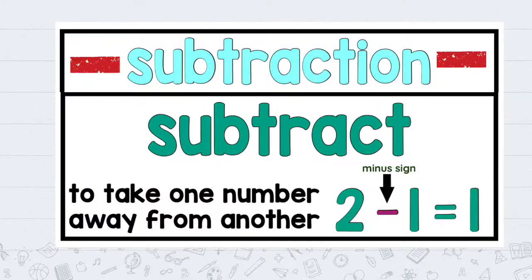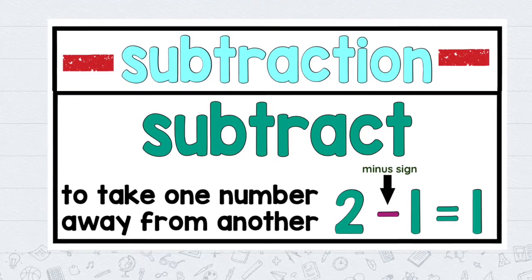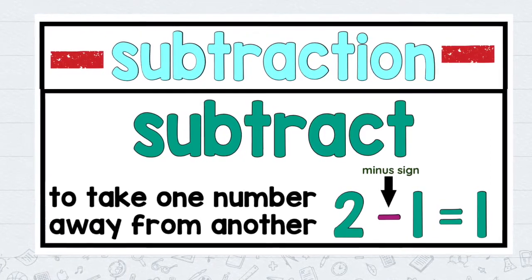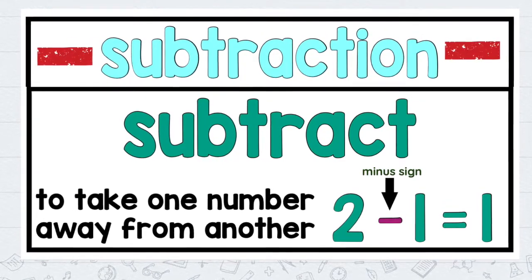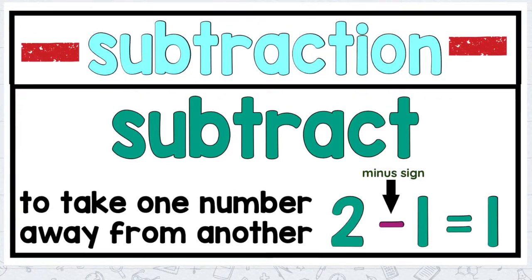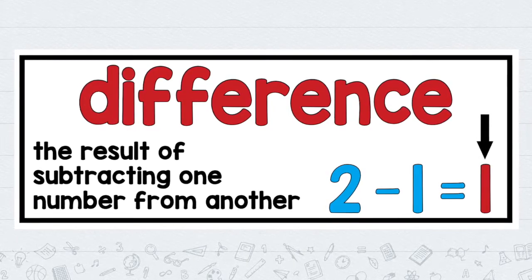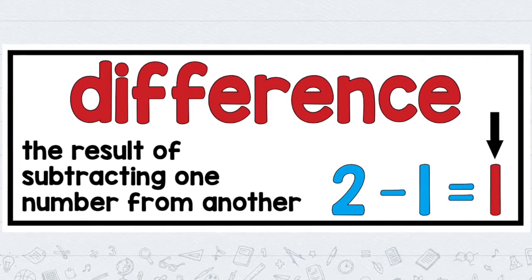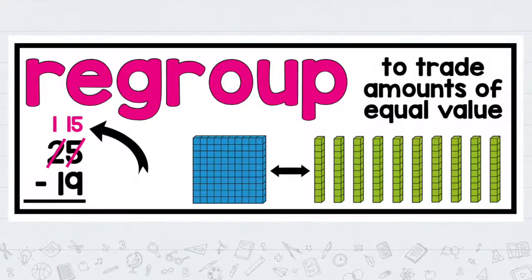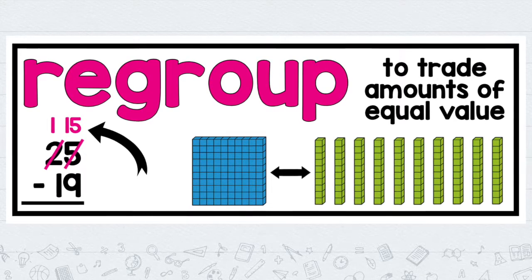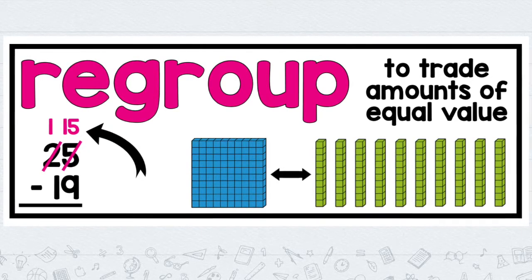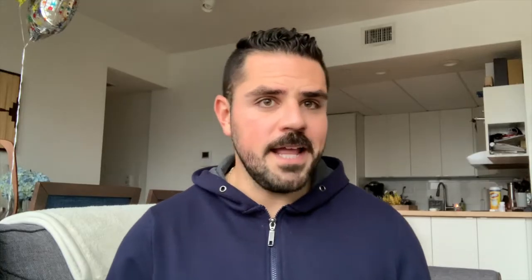Now let's talk about subtraction. Subtraction is a noun — it's the name of another math operation. The verb, the action word, would be to subtract. When I'm subtracting, I'm simply taking things away, taking one number from the other. The sign used for subtraction is called the minus sign. The answer to a subtraction problem is called the difference — that's the result after you took something away. Another important word is regroup, which is a verb meaning you trade amounts of equal value between place values when a number needs help from its neighbor.